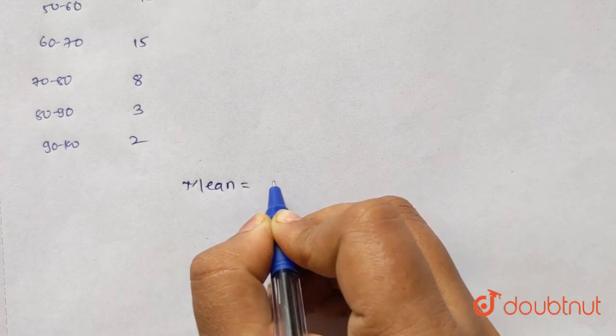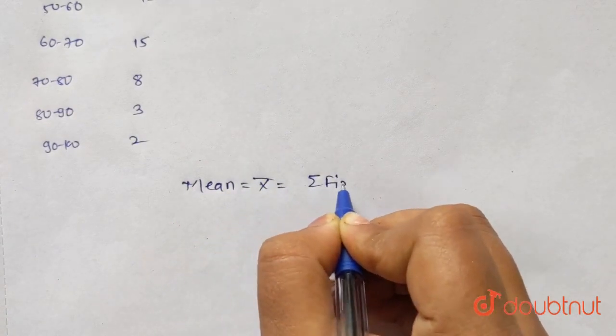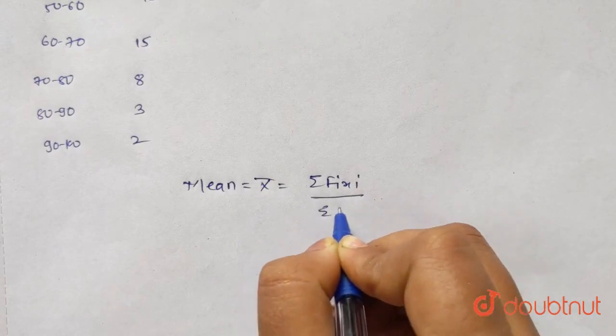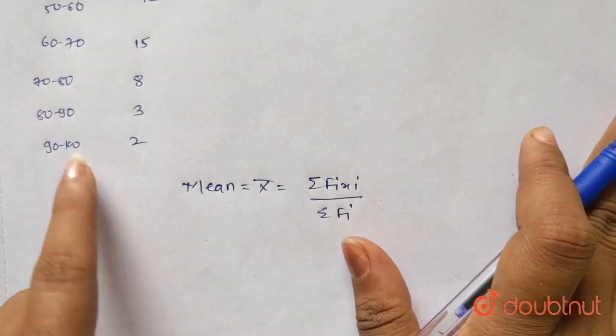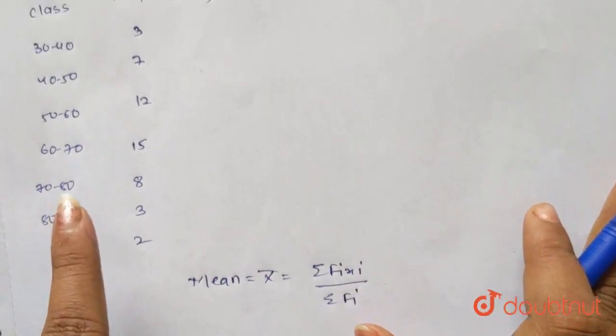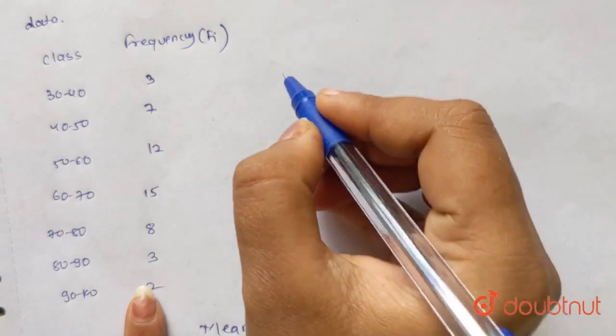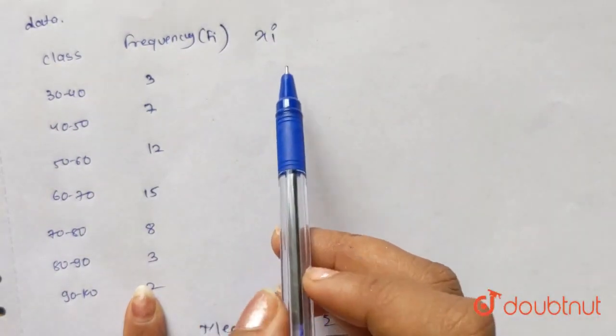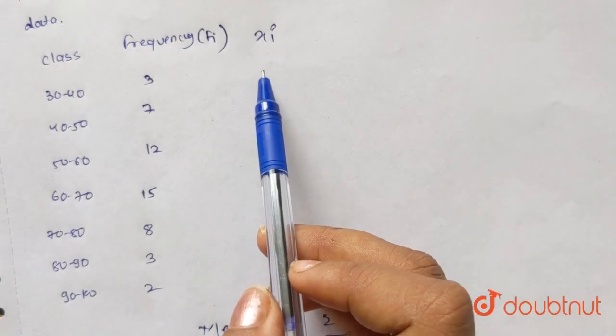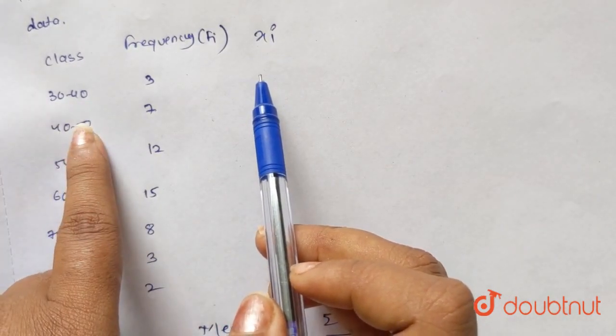What is the formula for mean? Mean is x bar equals sum of FI into XI divided by sum of FI. So we have frequency. First of all, class interval is given, so we will take the mean value. That is XI of your class. We have to add these two values and divide by 2.